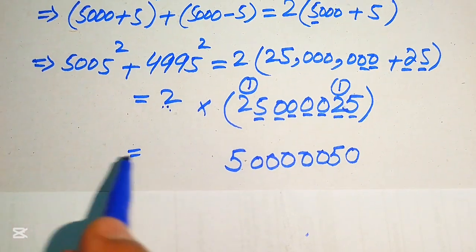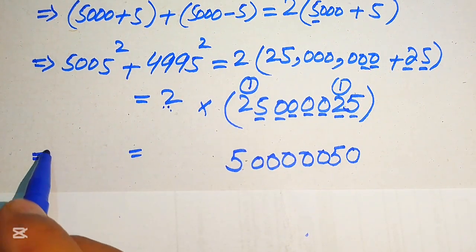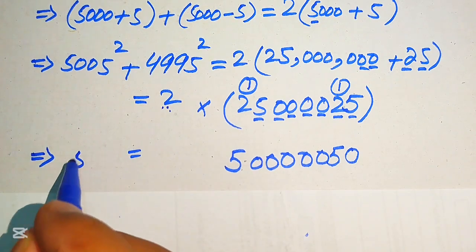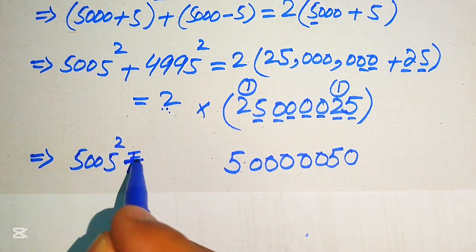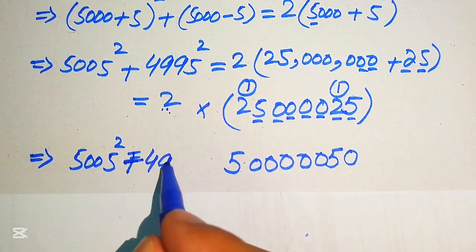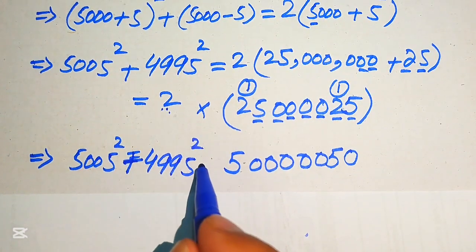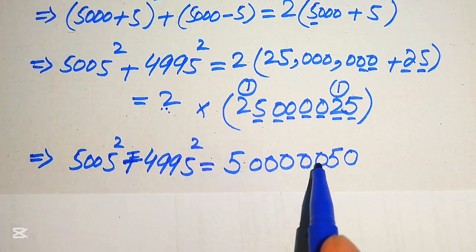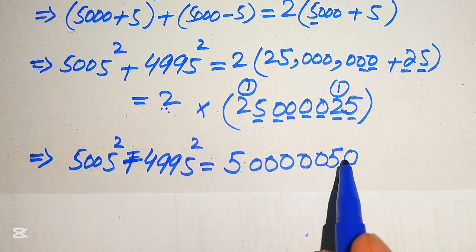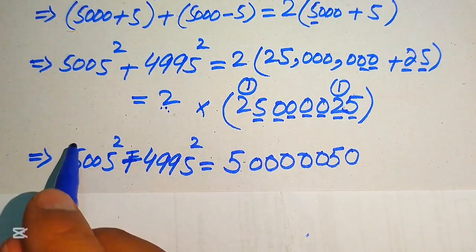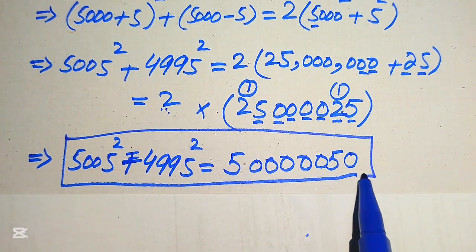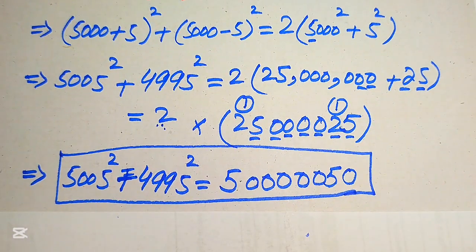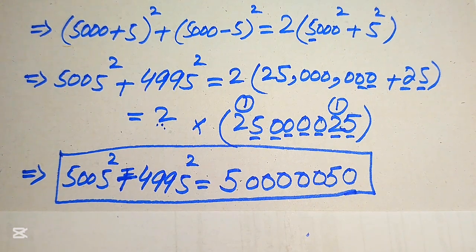So the final simplified form of the given algebraic expression is: 5005² + 4995² = 50,000,050. This is our final answer. Thank you so much for watching this video — please subscribe to my channel for more exciting videos.